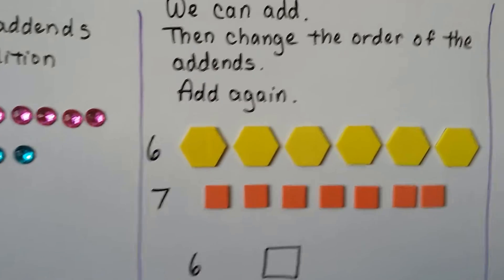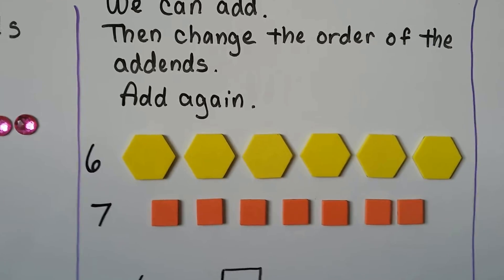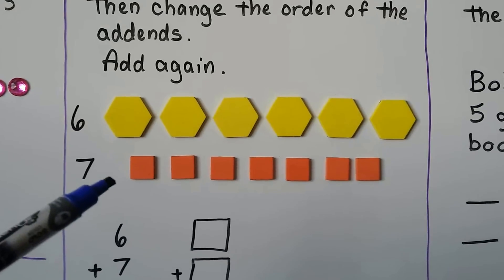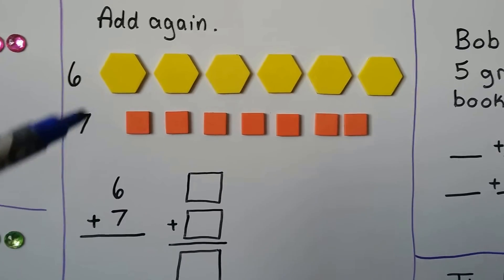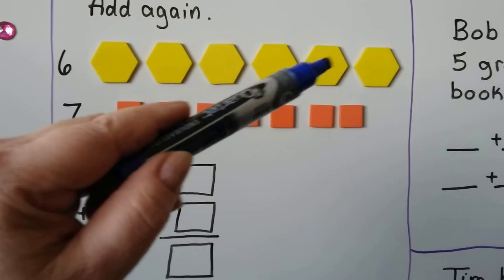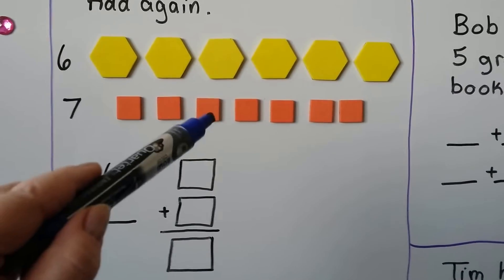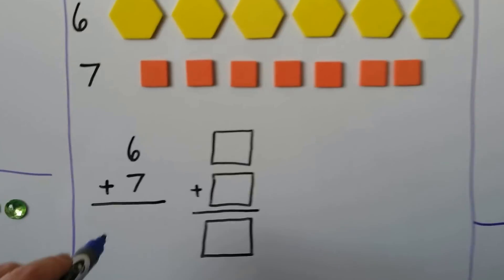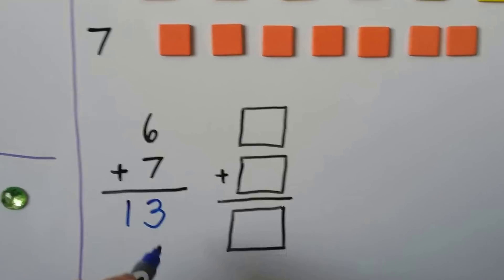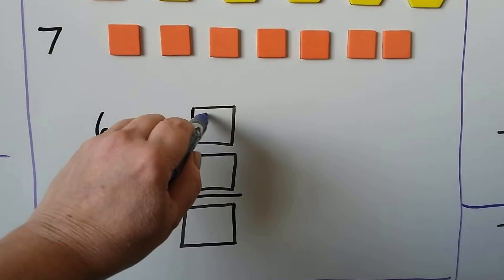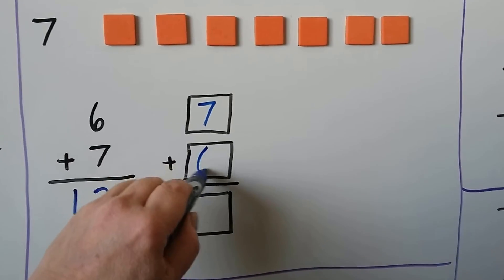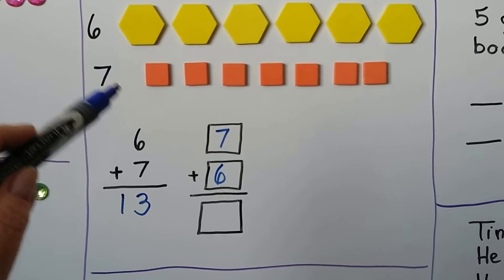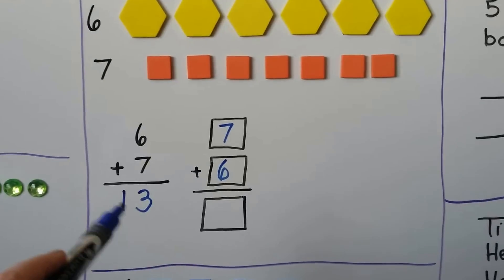We can add, then change the order of the addends and add again. We have 6 yellow hexagons and 7 orange squares. 6 plus 7 — 1, 2, 3, 4, 5, 6, 7, 8, 9, 10, 11, 12, 13 — we have 13 shapes. 6 plus 7 is equal to 13. We can change the order of the addends and put the 7 on top and the 6 down here. We haven't taken any shapes away or added any, so it's still 13.